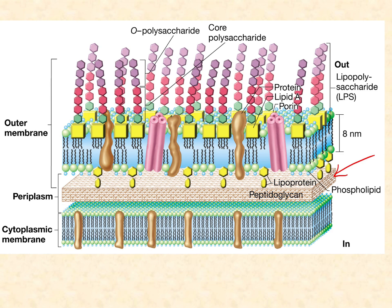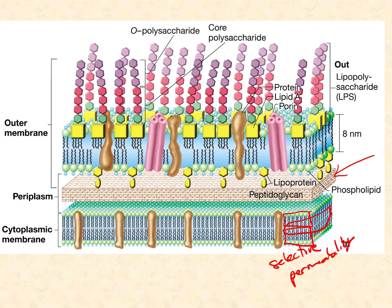Like all living things, there's a cytoplasmic membrane — it's a phospholipid bilayer. There's a periplasmic leaflet and a cytoplasmic leaflet. The entire interior is very hydrophobic, and it allows for selective permeability. Selective permeability is the key function of that cytoplasmic membrane: to determine what can come and go.